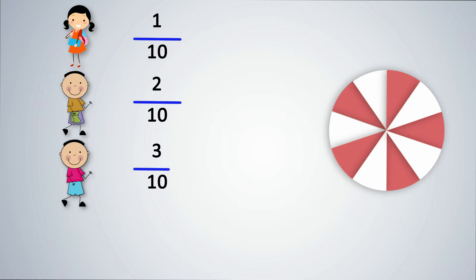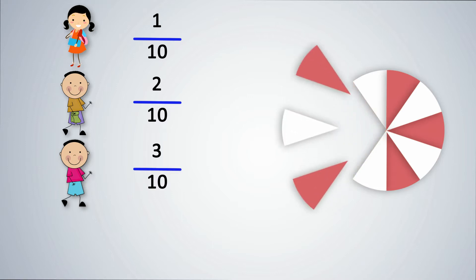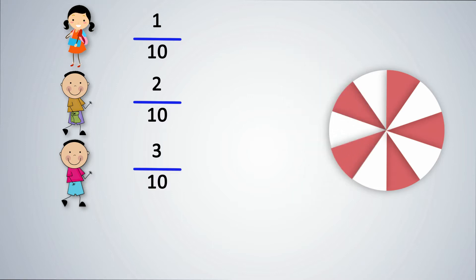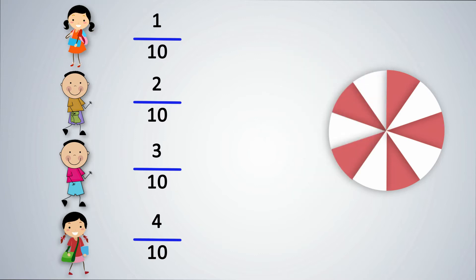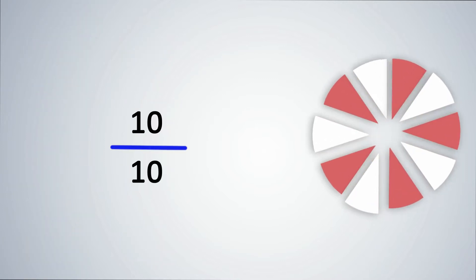Ravi takes 3 upon 10 parts. Similarly, Saeeda takes 4 upon 10 of the circle. The denominator tells us how many parts the whole is divided into. These are parts of a whole and are called fractions. 10 upon 10 is one whole.